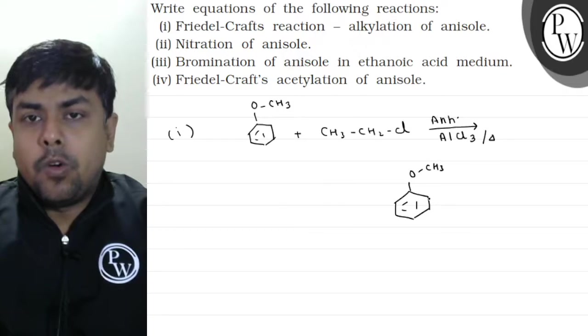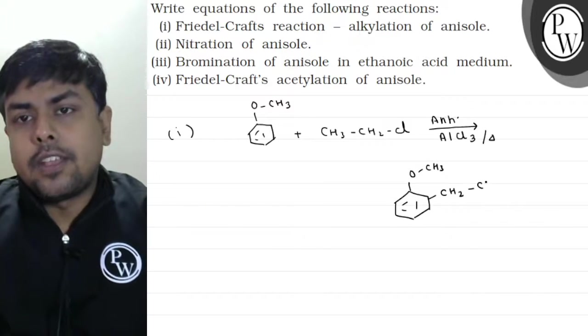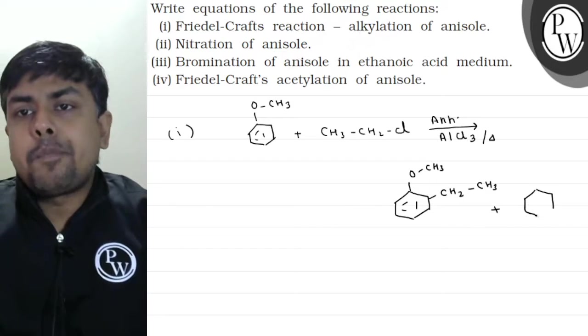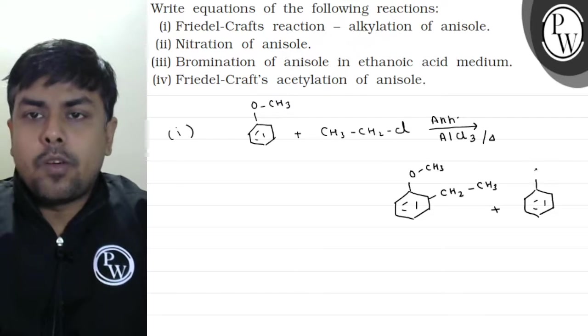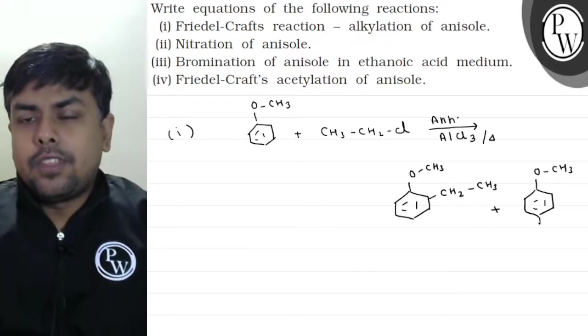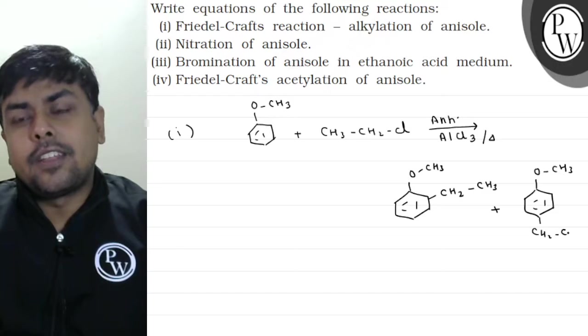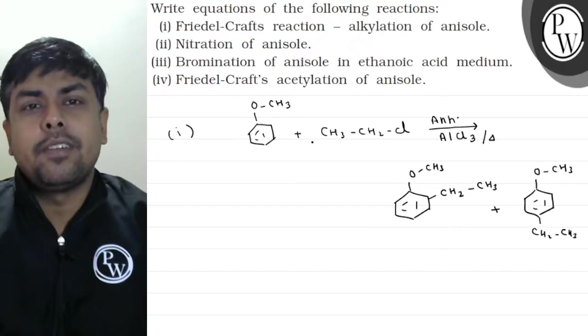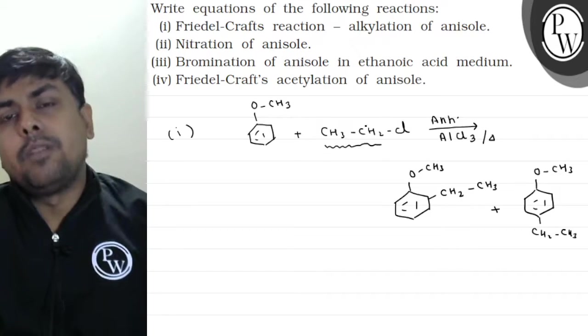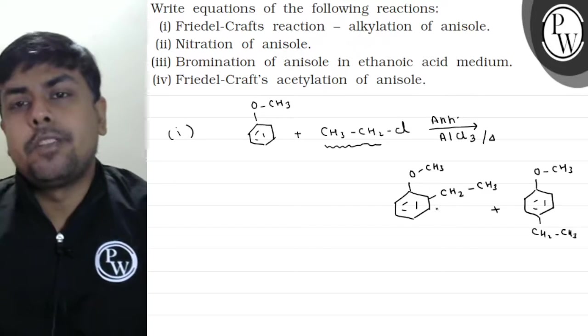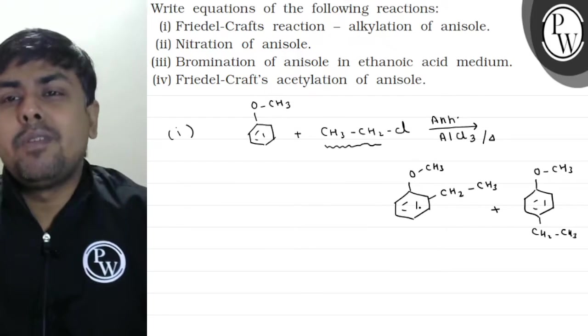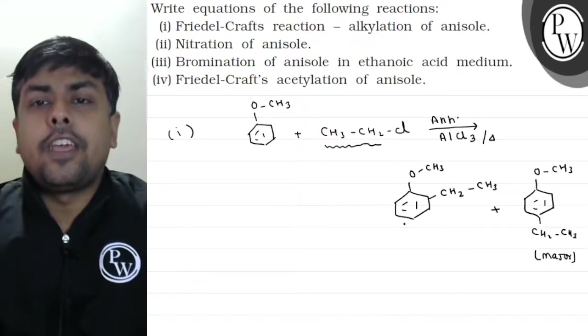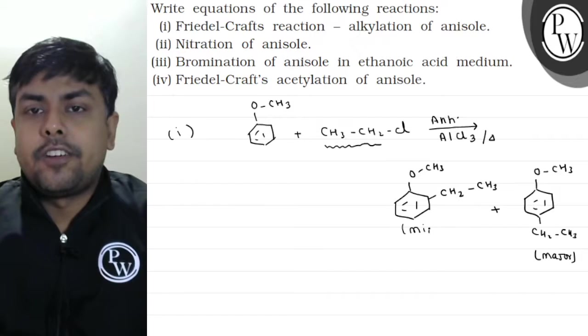What product will I get? The incoming electrophile will get attached at ortho and para position. First, let me attach it at ortho: C-H-2, C-H-3. Plus, I'll also get it at para position. The product at para will be: O-C-H-3 with C-H-2, C-H-3. Here, the carbocation intermediate is C-H-3, C-H-2 positive. This will be my electrophile. It will attach at ortho and para positions. Which one will be major? Para one is major, and the ortho one is minor.